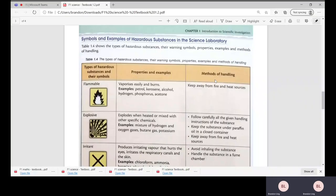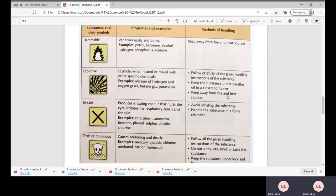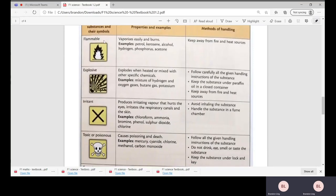Certain symbols are usually associated with different types of chemicals in the lab. First we have the flammable type. As the picture shows, it basically shows chemicals which are easily flammable—they can vaporize easily and burn. For example, petrol, kerosene, alcohol, etc. The method of handling will be: keep away from fire and heat sources, otherwise they may explode or burn.